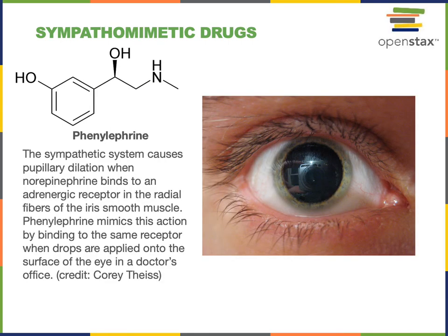A sympathomimetic drug is a chemical that stimulates a sympathetic response, so an adrenergic receptor agonist would be a sympathomimetic drug. Phenylephrine is an example of an adrenergic receptor agonist, which is used clinically to dilate the pupils.